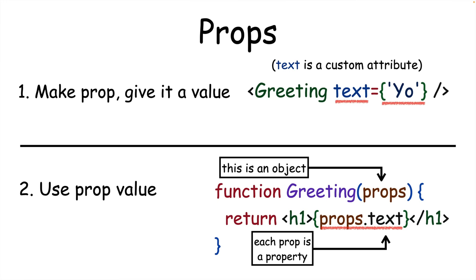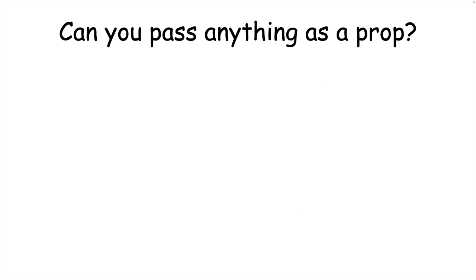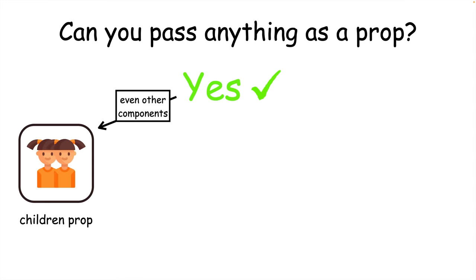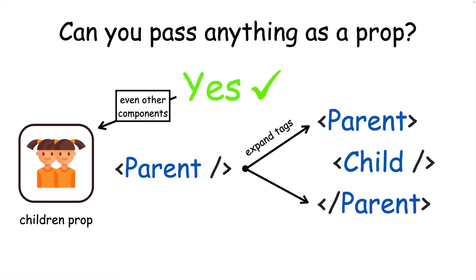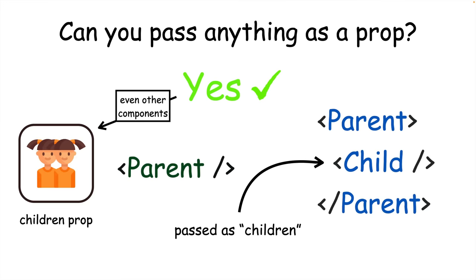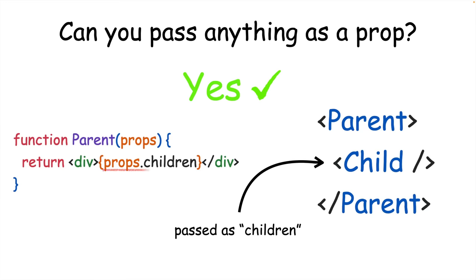Think of them like custom attributes you can add to any component. Can you pass anything as a prop? Yes, you can. You can even pass other components as props using the children prop. If you make opening and closing tags for a component, you can pass other components in between them. These passed components are called children, and you can access them on the children prop of the parent component.